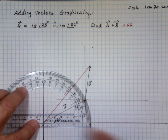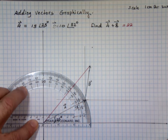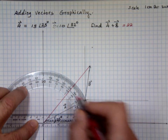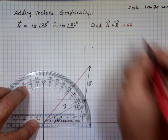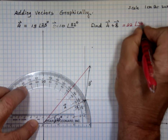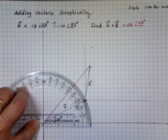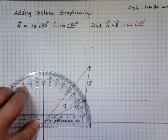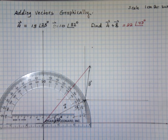The direction looks like somewhere between 47 and 48 degrees. So if you add the two vectors, the result is 22 at an angle of 47. We'll do the math shortly and we'll see if we're right or not.